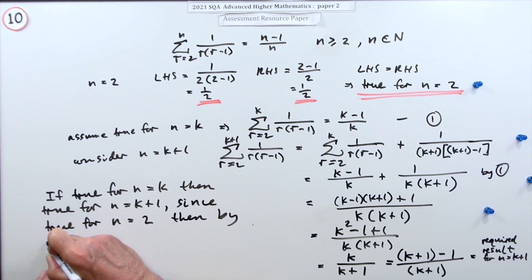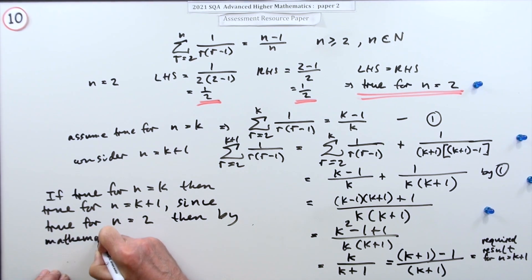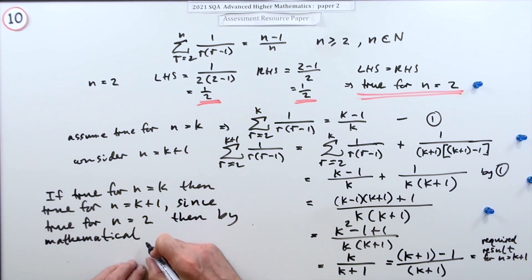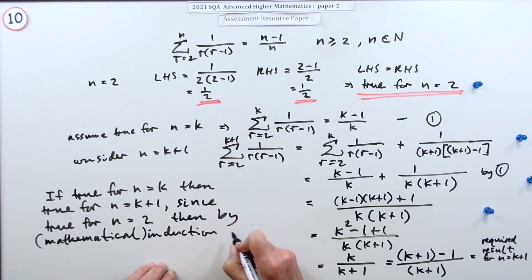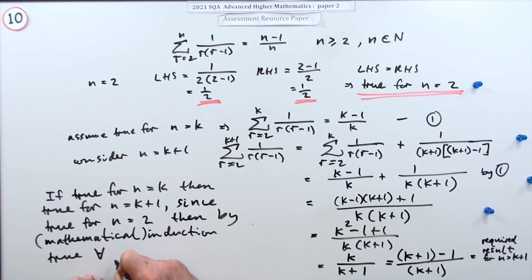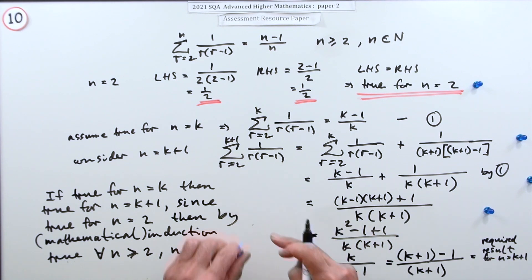Or if you wanted to be more formal, by mathematical induction, because induction is just a generalizing process - by, although it's implied by the question because it's a maths question, so I'll put that in a bracket - then by induction it's true, just use a bit of shorthand here, for all n greater than or equal to 2, and I'll just say also where they are natural numbers. Now this mark was for finishing this off, showing you got the required result and making the statement.